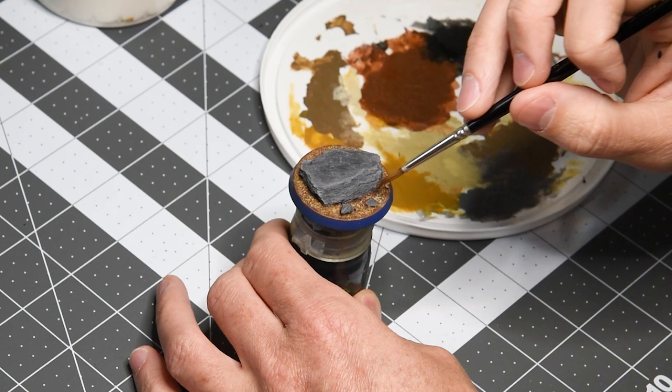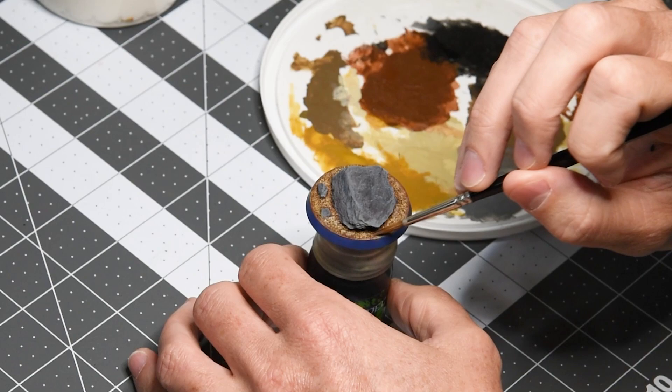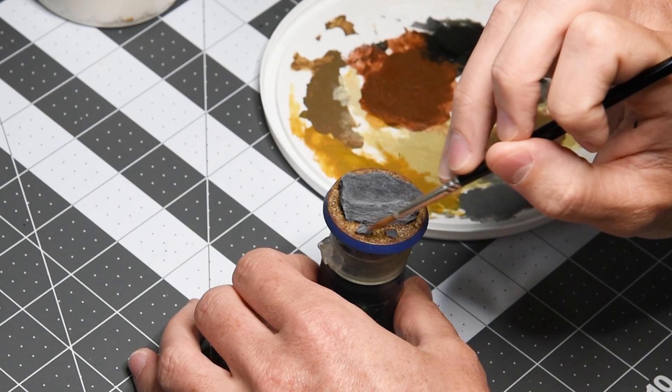And that's going to add some depth to the sand that otherwise wouldn't appear if it were just one shade. And it's the same thing we're doing on the rock. You can really see some of the black and brown showing through, and you can see the lighter gray highlights on the edge just from applying the paint carefully there.